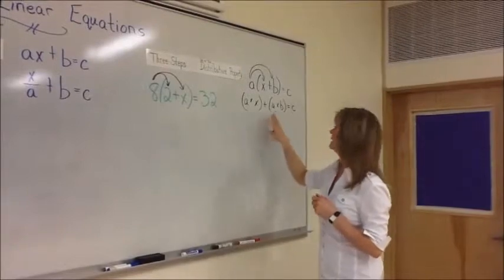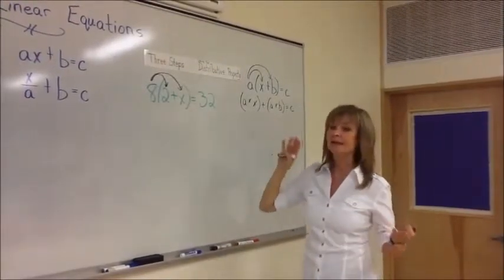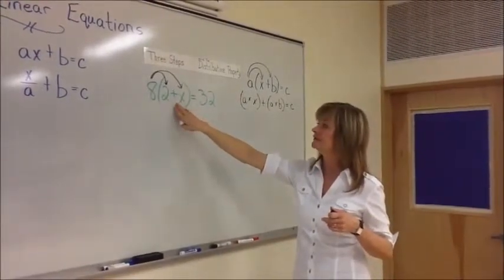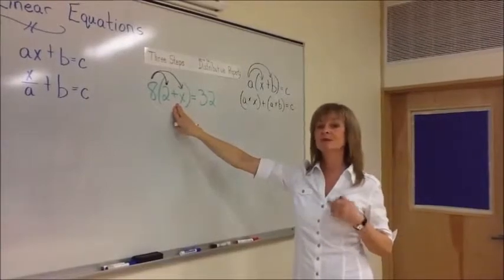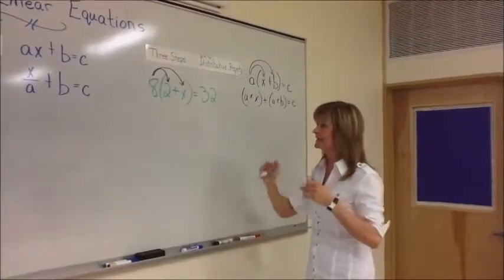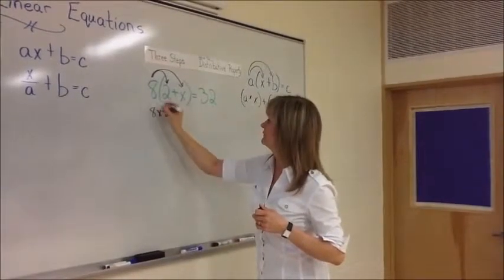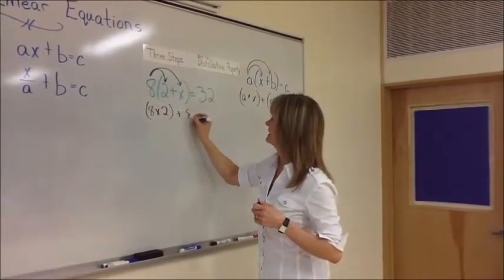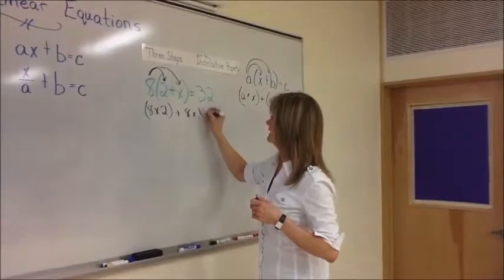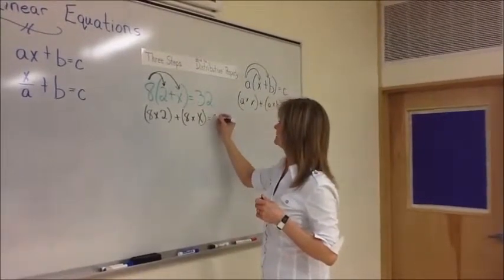And if you're wondering, why did I put a plus sign here? It could be a negative. And if it was a negative, this would be the symbol that would be in this bracket section. So, eight times two, let us rewrite this: plus eight times X, in brackets, equals 32.